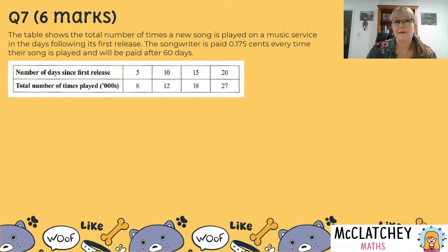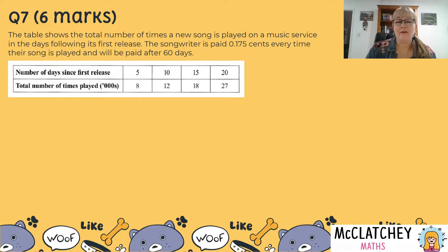It's worth six marks. The table shows the total number of times a new song is played on a music service in the days following its first release. The songwriter is paid 0.175 cents — that's less than one cent — every time this song is played, and will be paid after 60 days. Here's our table showing the number of days since release: 5, 10, 15, and 20, and the total number of times it was played in thousands.